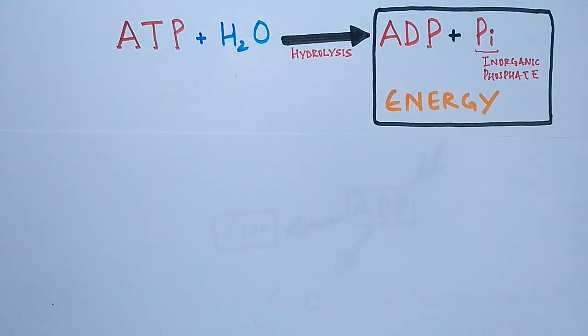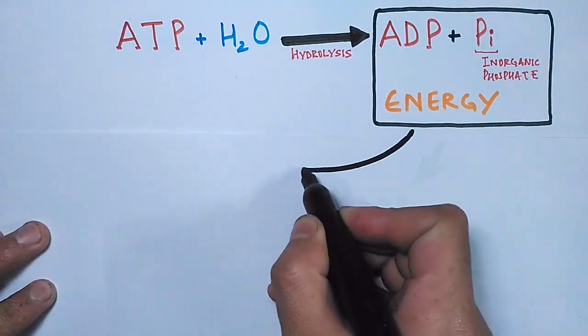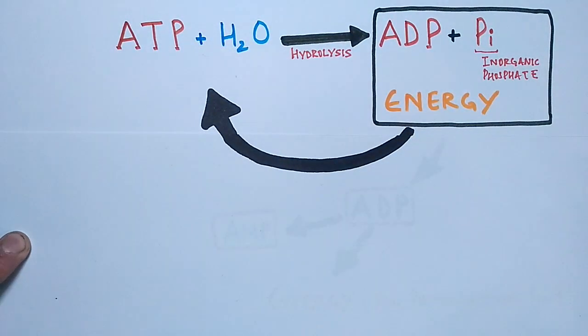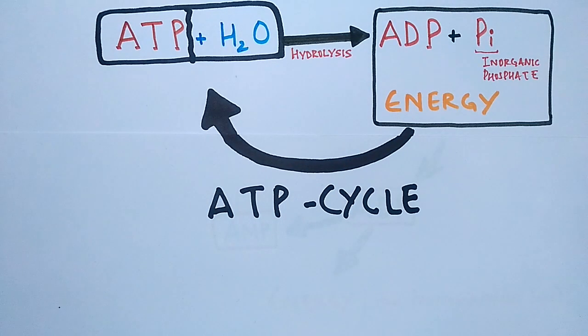Now getting back to the first reaction, we see in this reaction the ADP plus inorganic phosphate recycles back to ATP in the ADP-ATP cycle, which we have already discussed. The ATP-ADP cycle - the link slides in for that video.